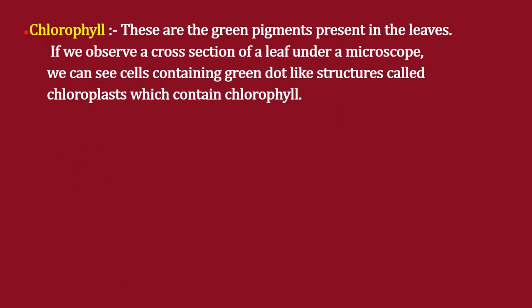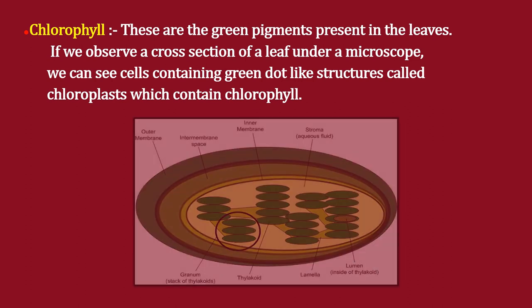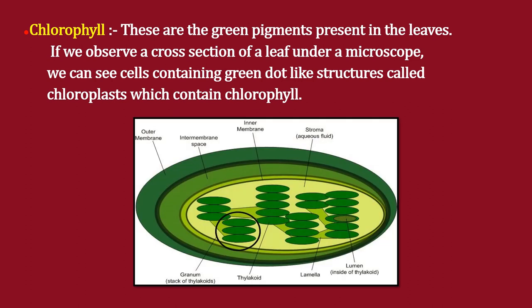Chlorophyll consists of green pigments present in leaves. If we observe the cross-section of a leaf under a microscope, we can see cells containing green dot-like structures called chloroplasts, which contain the chlorophyll. Please take note of the diagram of chlorophyll.